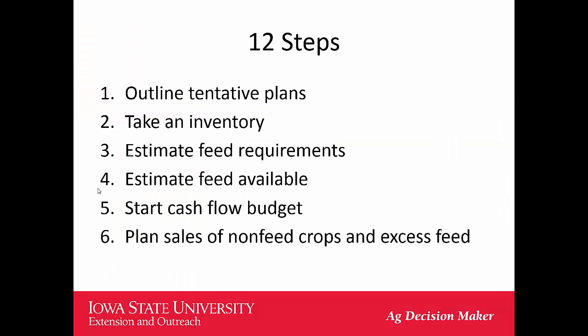First, think about what your plans are. You outline those tentative plans, because we're not in agriculture just to repeat last year — sometimes we're changing things. Second, what do you have in inventory? If you don't have livestock, it's what crop inventory — corn and beans — plus other inventory that might be sold within the year. If you do have livestock, what feed requirements do they have, and what feed do you have available, including silage or hay? Then you start the cash flow budget.